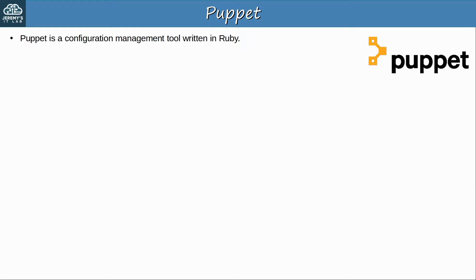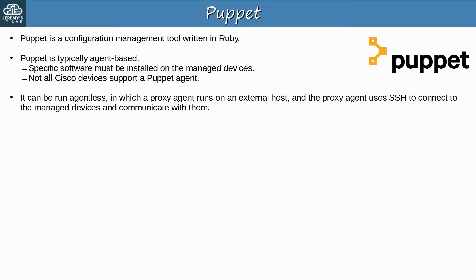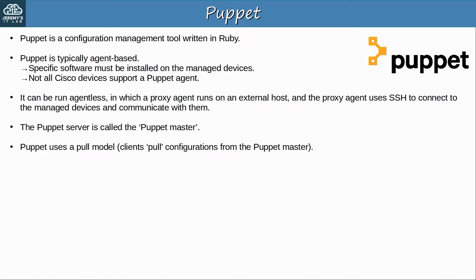Next up, Puppet. Puppet is a configuration management tool written in Ruby. It is typically agent-based, which means that specific software — a Puppet agent — must be installed on the managed devices. Not all Cisco devices support a Puppet agent, which is a major reason that Ansible is more popular for network device management. However, it can be run agentless, in which a proxy agent runs on an external host and uses SSH to connect to the managed devices. Note that in Puppet the server is called the Puppet Master. Puppet uses a pull model — clients pull configurations from the Puppet Master — and clients use TCP 8140 to communicate with the Puppet Master.